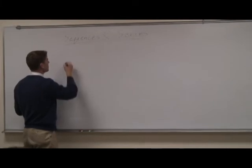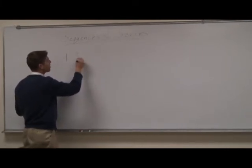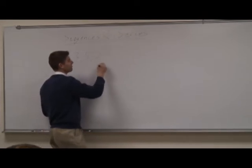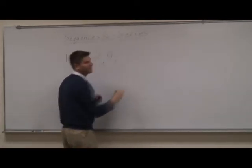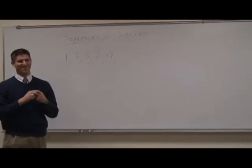Remember that a sequence is an ordered list of numbers, so 1, 3, 5, 7, 9, and so on, is that amazing sequence called the odd numbers, right?